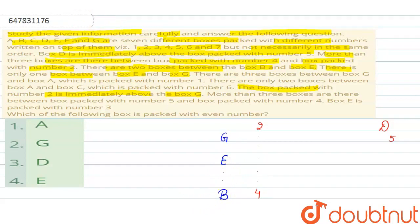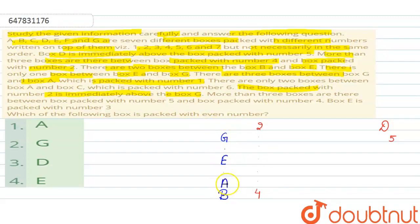In the next condition, there are three boxes between box G and box A, which is packed with number 1. So box G and box A have three boxes between them — one, two, three — and here you will find box A. Box A is packed with number 1.